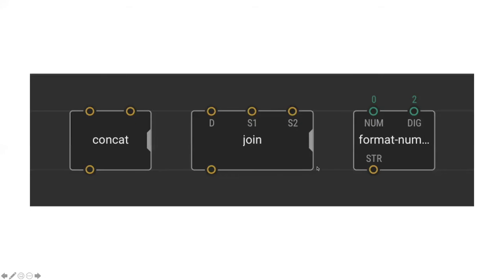Finally, the format number node simply formats a number to a certain number of decimal places. The digit pin sets the number of decimal places - in this example we set it to two. There are other useful nodes for formatting numbers covered in the beginner's guide if you're interested.